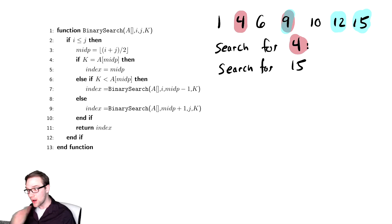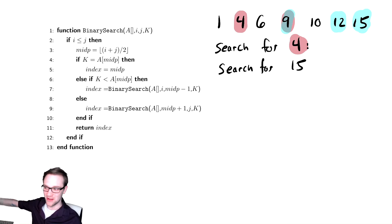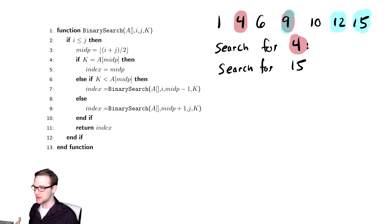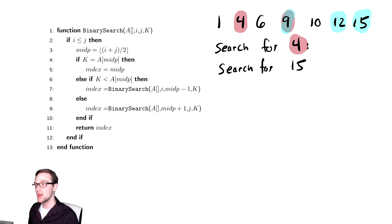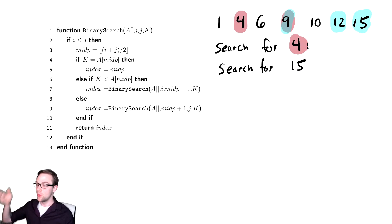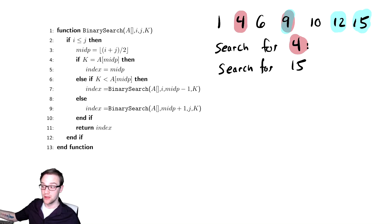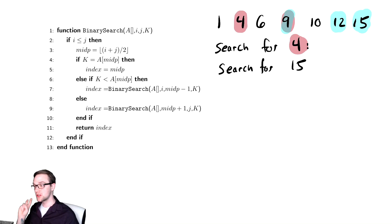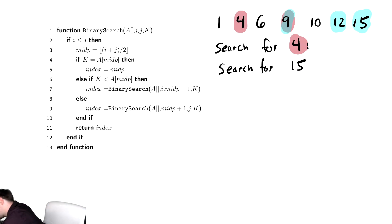There are a couple of problems with this code though — some things we haven't seen before that are going to cause some issues. We need to talk about the fact that there are two divergent behaviors here. When you find the answer, it takes almost no time. And if you don't find the answer, it could take much longer. So we're going to talk about two different ideas: best case and worst case running time.